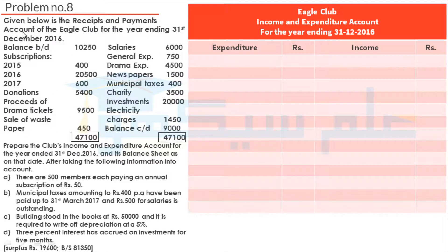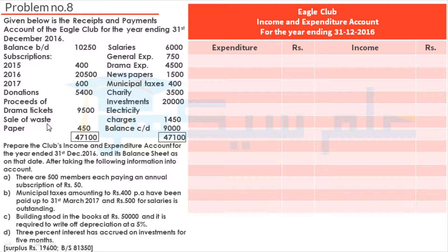Given below is the Receipts and Payments Account of the Eagle Club for the year ending 31st December 2016. Balance brought down Rs. 10,250. Subscriptions: 2015 Rs. 400, 2016 Rs. 20,500, 2017 Rs. 600. Donations Rs. 5,400. Proceeds of drama tickets Rs. 9,500. Sale of wastepaper Rs. 450.